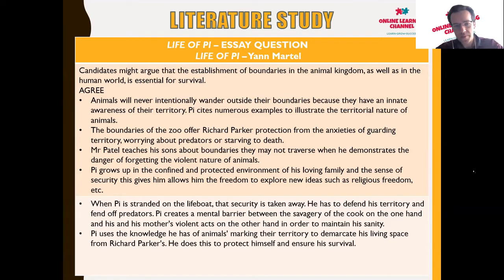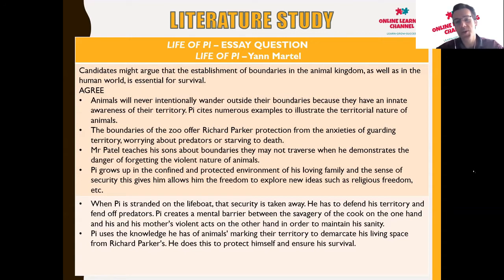Animals will never intentionally wander outside their boundaries because they have an innate awareness of their territories. Pi cites numerous examples of the territorial nature of animals. The tiger Richard Parker's boundaries at the zoo offered protection from the anxieties of guarding territory, predators, or starvation. Mr. Patel teaches his sons about boundaries not to traverse, demonstrating the violent nature of animals. Pi grows up in the protected environment of a loving family, allowing him freedom to explore new ideas like religious freedom.